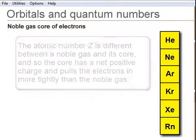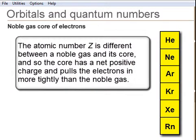The reason for this is that the atomic number Z varies for the noble gas core, which means that the electrons are pulled in more tightly than for the noble gas itself.